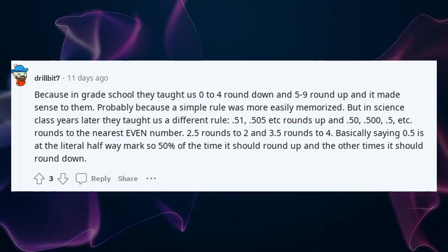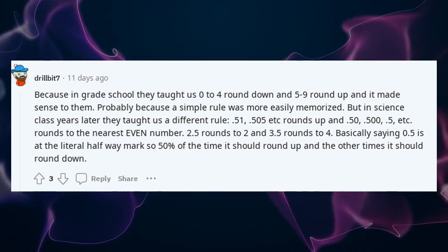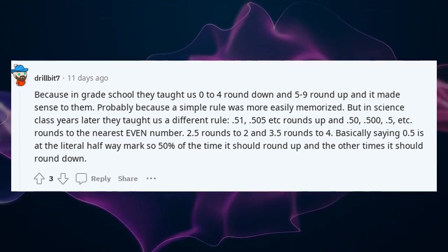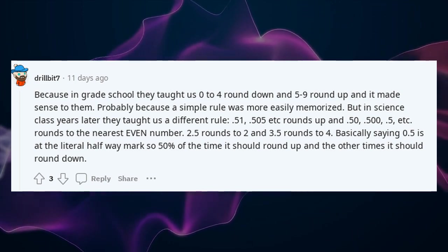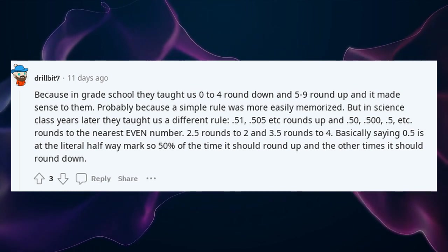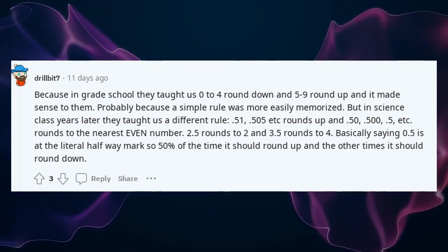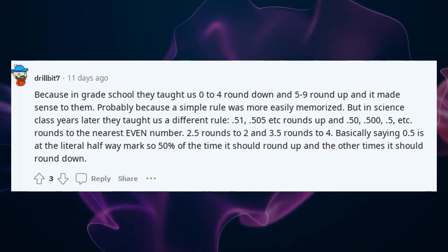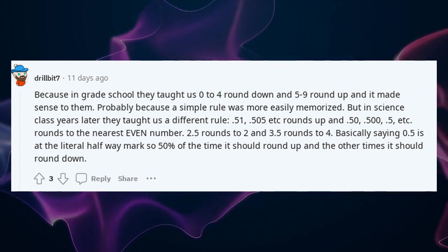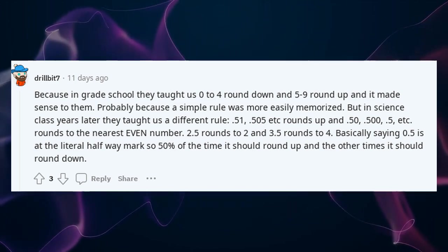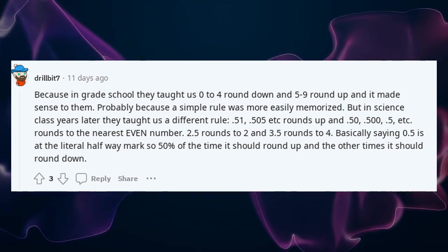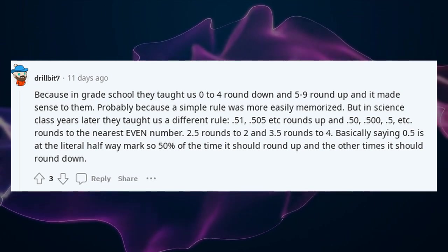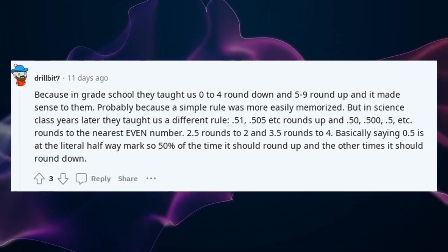In grade school they taught us 0 to 4 round down and 5–9 round up, probably because a simple rule was more easily memorized. But in science class years later, they taught a different rule: 0.505, 0.51, etc. round to the nearest even number — so 2.5 rounds to 2 and 3.5 rounds to 4. Basically saying 0.5 is at the literal halfway mark, so 50% of the time it should round up and the other times it should round down.